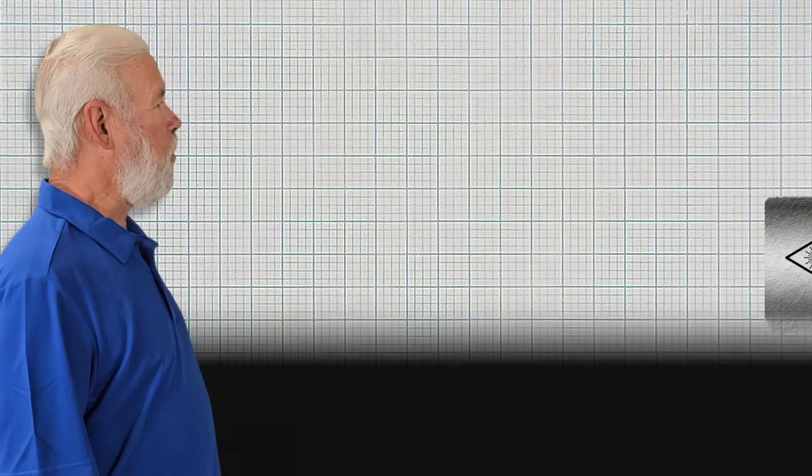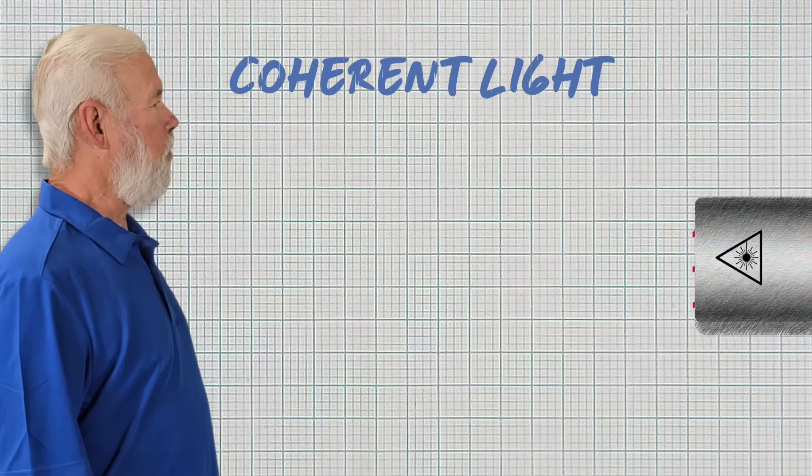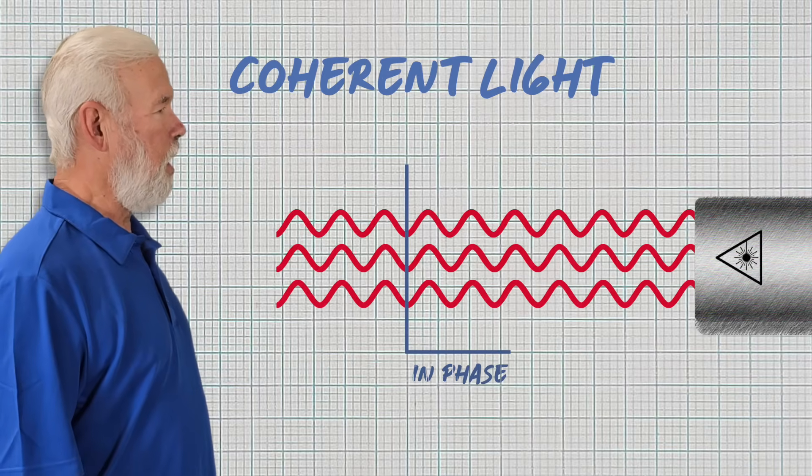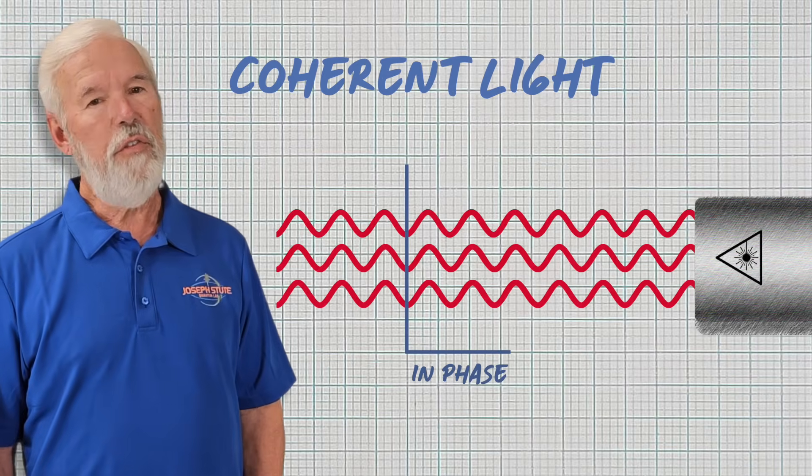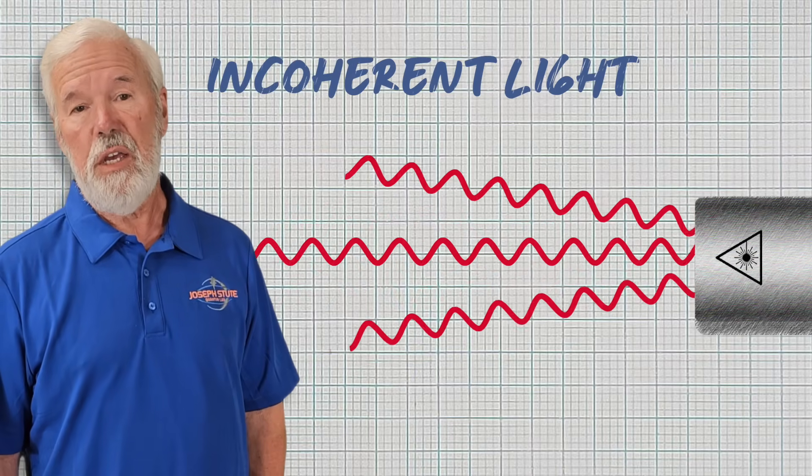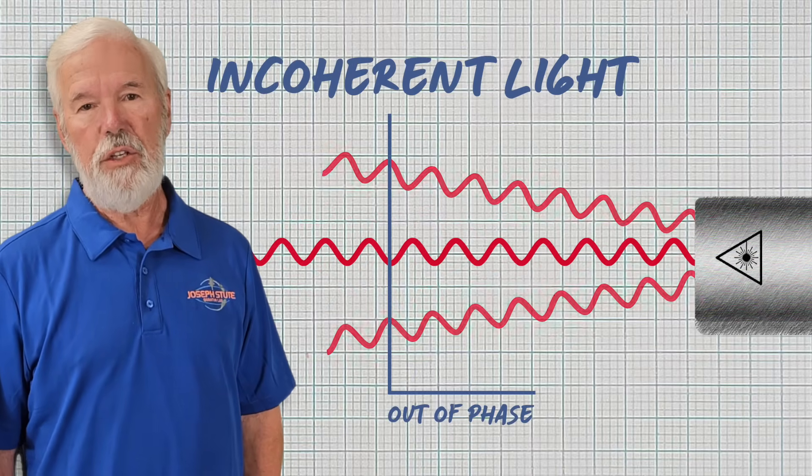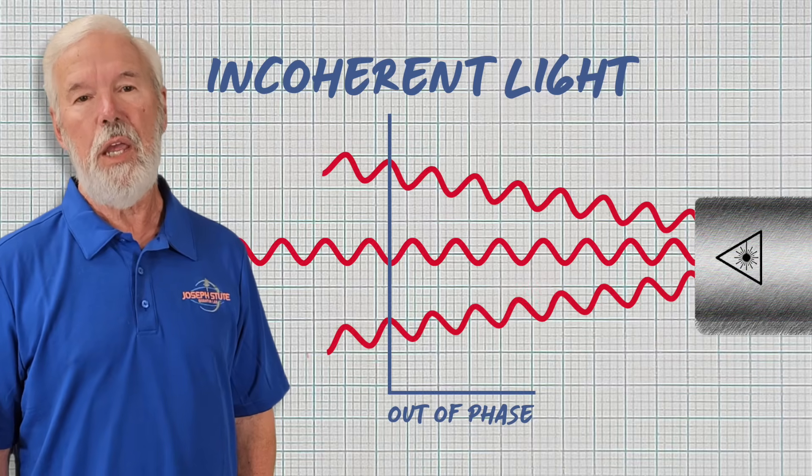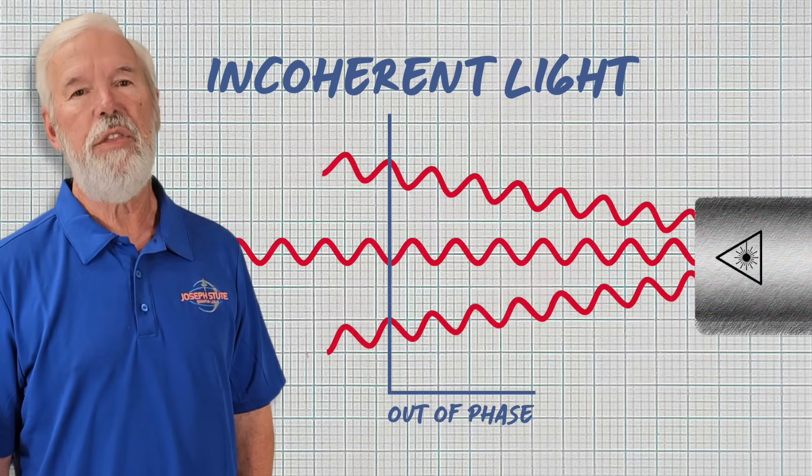The definition of coherent light states photons must have the same wavelength and phase. The diverging beam does not fit the definition because photons at the edges travel farther and fall behind photons at the center.